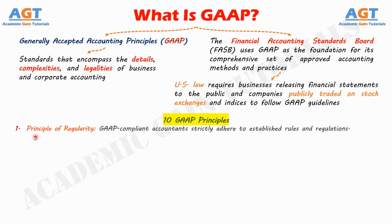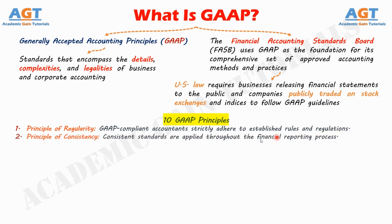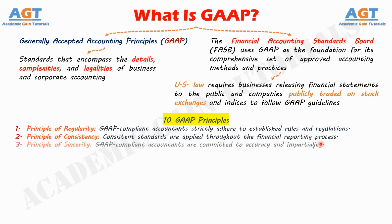1. Principle of Regularity, which states GAAP-compliant accountants strictly adhere to established rules and regulations. 2. Principle of Consistency, which states consistent standards are applied throughout the financial reporting process. 3. Principle of Sincerity, where GAAP-compliant accountants are committed to accuracy and impartiality.